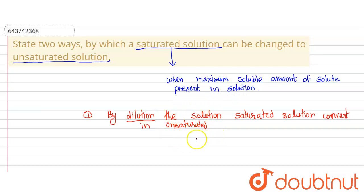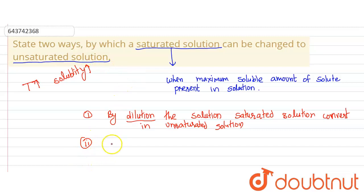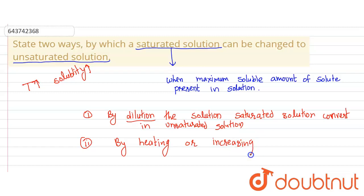The second method is: we know that on increasing temperature, solubility increases. So by heating the solution, the maximum soluble amount of solute will be increased, and so the solution can change into unsaturated. By increasing temperature, we change the saturated solution into unsaturated. So these are the two ways by which a saturated solution is converted into an unsaturated solution.